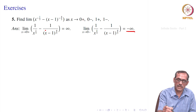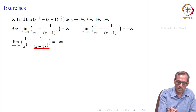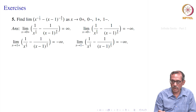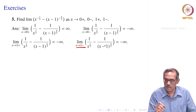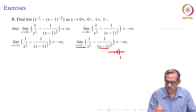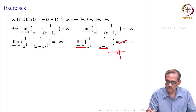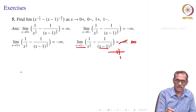As x → 1+, x - 1 is positive and near 0, so (x-1)^(4/3) → 0+ and 1/(x-1)^(4/3) → +∞. With the minus sign in front, the limit is -∞. As x → 1-, x - 1 is negative and near 0, so (x-1)^(4/3) = |x-1|^(4/3) → 0+ (even power makes it positive), giving 1/(x-1)^(4/3) → +∞ with the minus sign, resulting in -∞... actually since the sign cancels, the limit is +∞. So x → 1+ gives -∞ and x → 1- gives +∞.